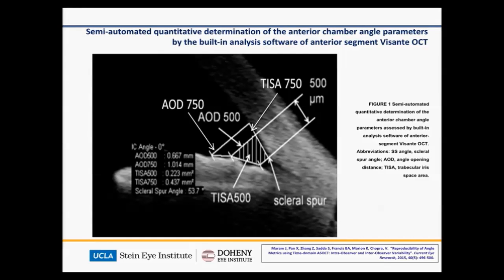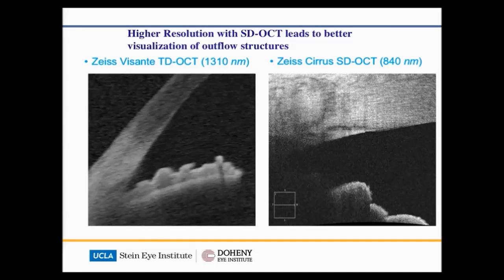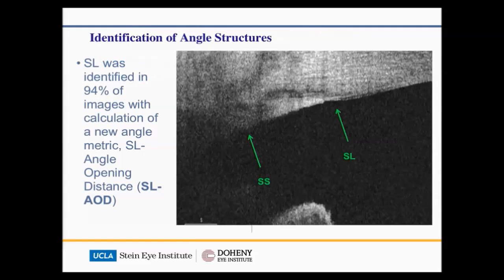This shows you some of those angle parameters, including angle opening distance and the TISA. With the resolution increase in SDOCT versus time domain OCT, you can see the images change. You have much better quality imaging of the angle, but you lose some of the peripheral iris insertion and the deep angle recess that you're able to see a little bit better in time domain OCT.